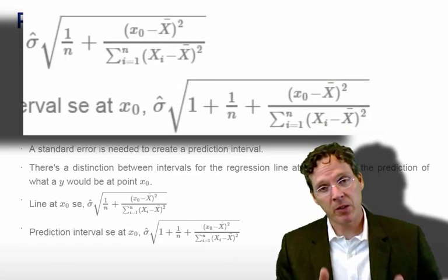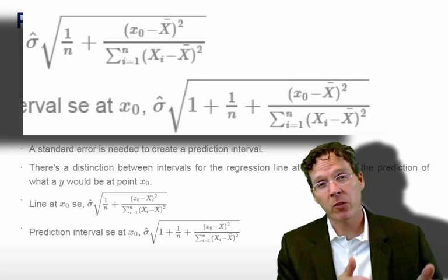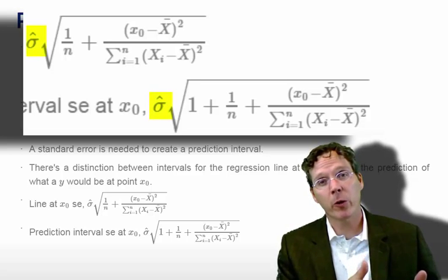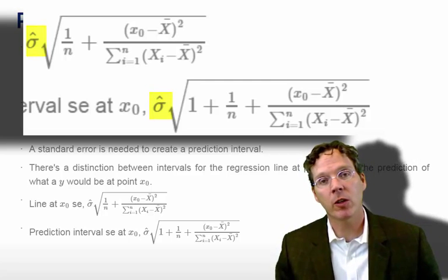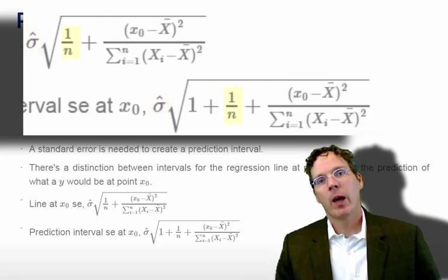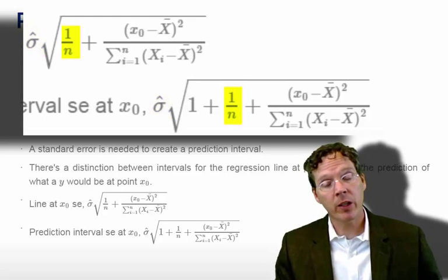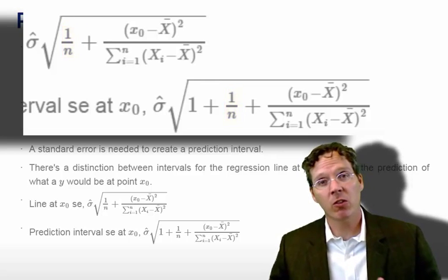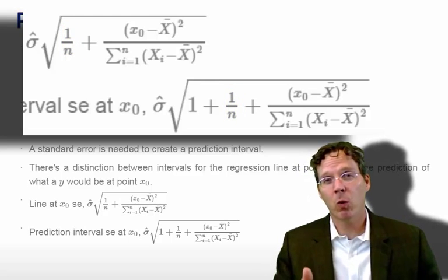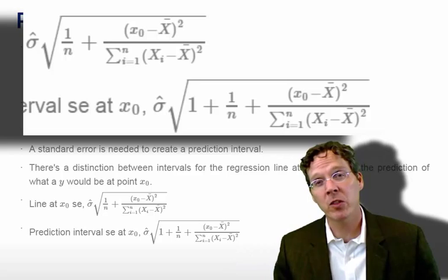What we have here, and it makes sense that our prediction variance first relates around how variable the points are around our regression line, sigma hat. And it makes sense that that would be involved in our prediction error. However, here we have this term 1 over n, and that also kind of makes sense. Typically our standard errors decrease at some rate, 1 over square root n. So a 1 over n in a square root seems kind of reasonable.